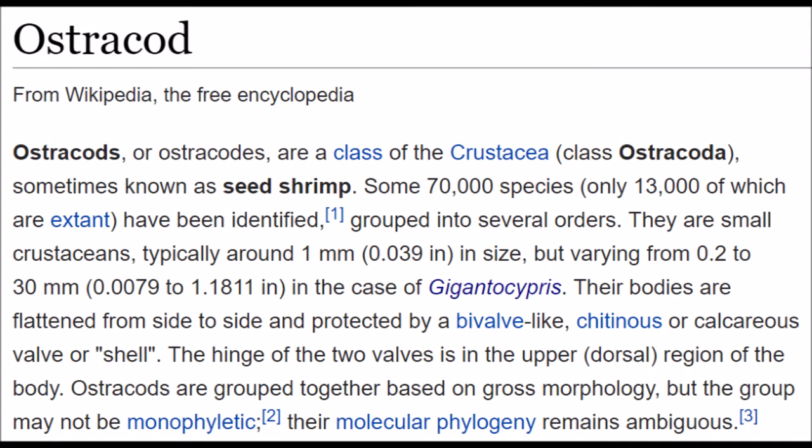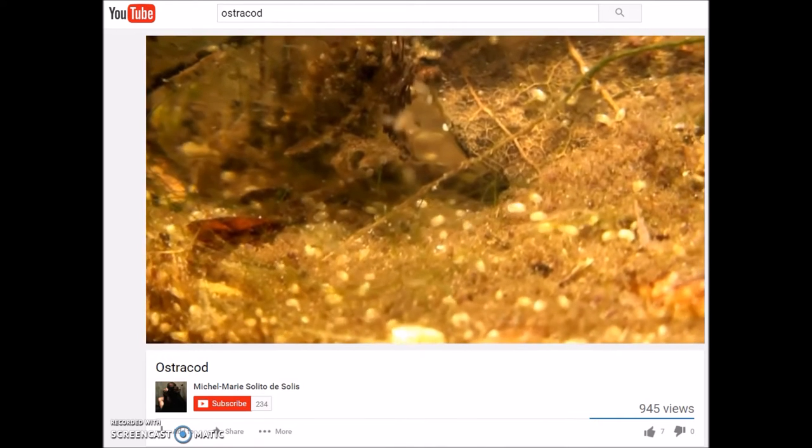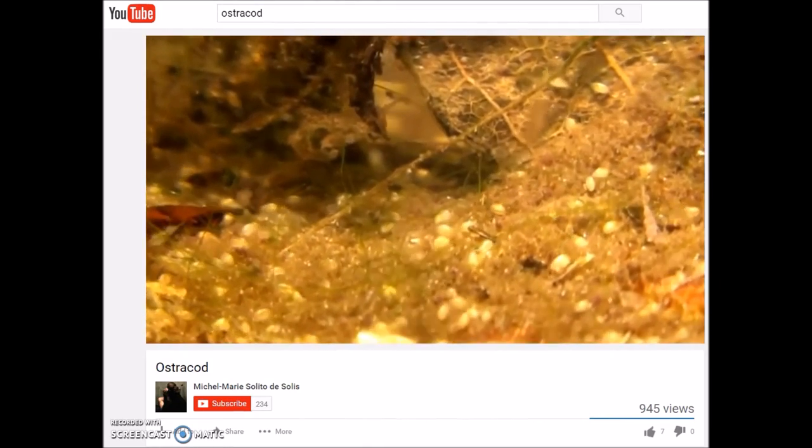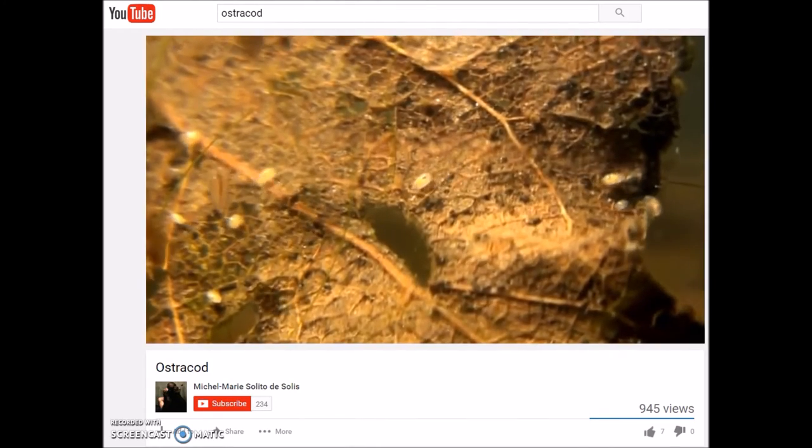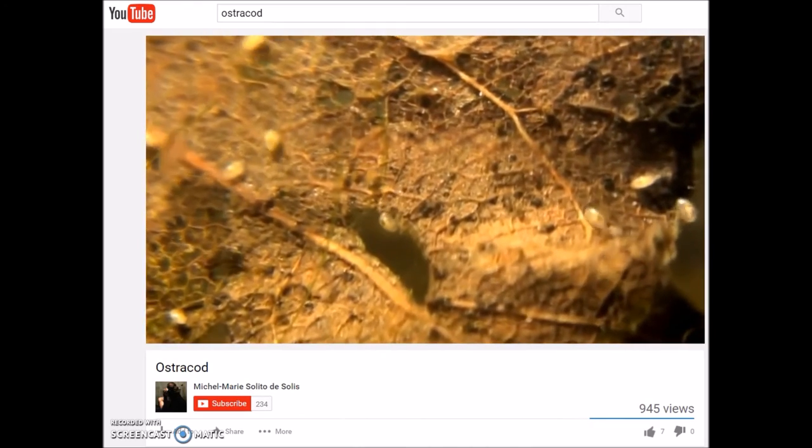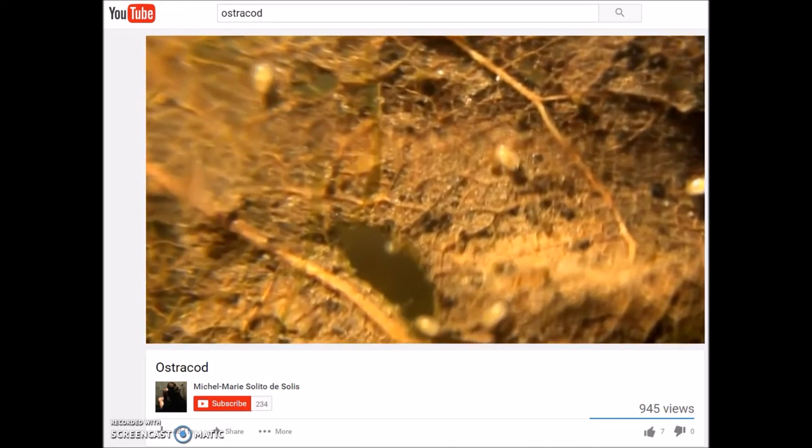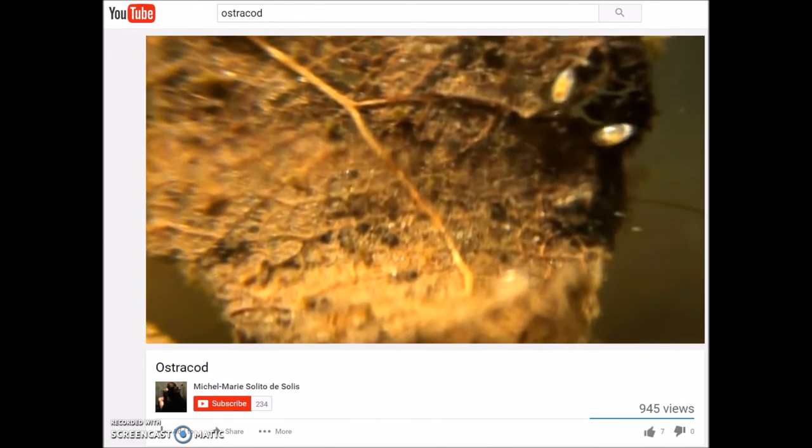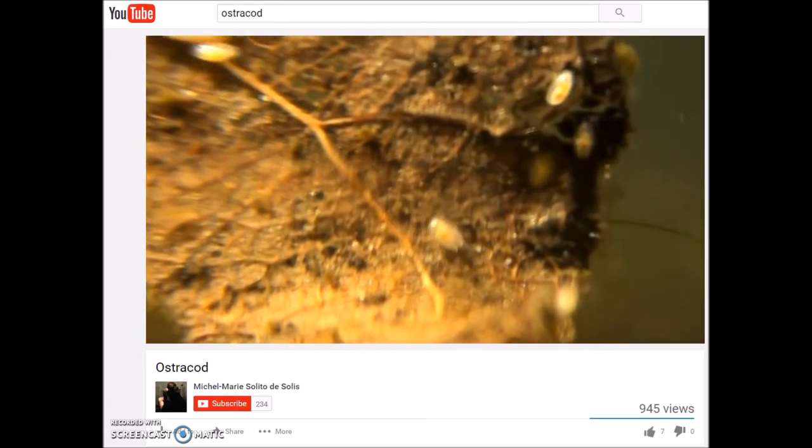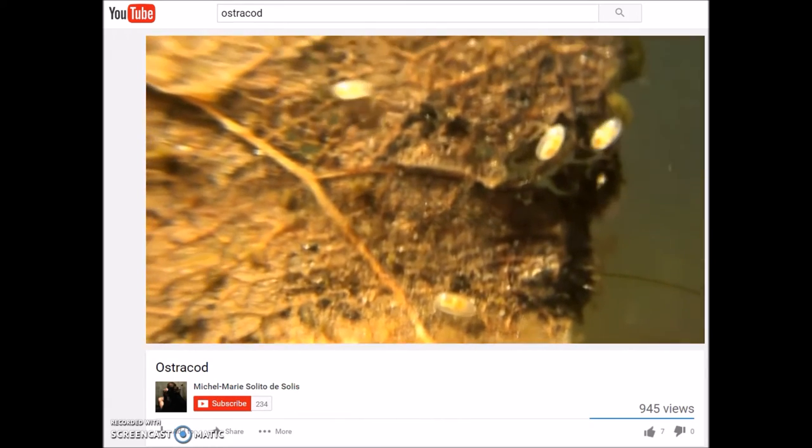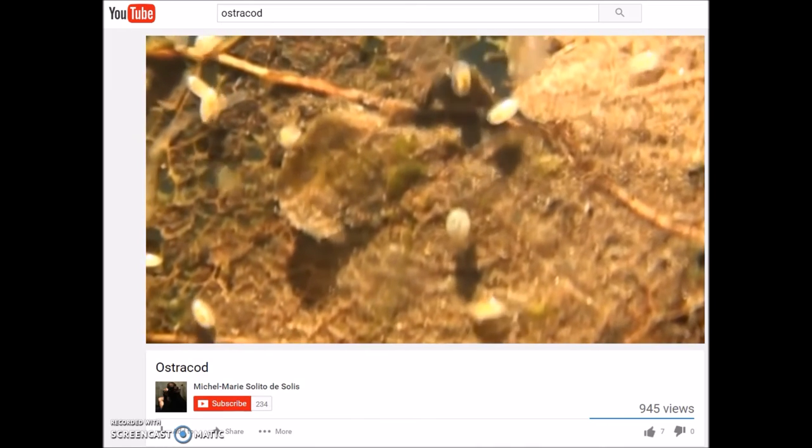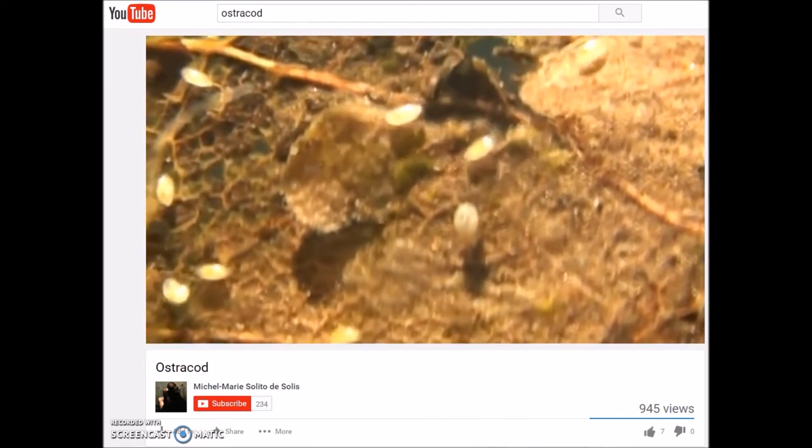According to Wikipedia, ostracods are also known as seed shrimp. They're in the class Ostracoda. Their bodies are flattened from side to side and protected by a bivalve-like chitinous or calcareous valve or shell. They have a wide range of diets, and the group includes carnivores, herbivores, scavengers, and filter feeders.